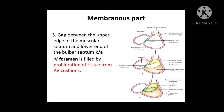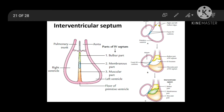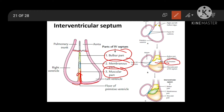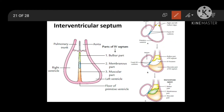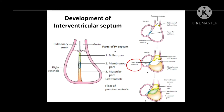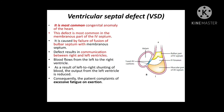Thus the interventricular septum is formed by three parts: first is the bulbar part, second is the membranous part, and third is the muscular part. Muscular part develops from the floor of the ventricle, bulbar part from the bulbar ridges in the distal bulbous cordis, and the interventricular foramen between them is filled by the membranous part, developing from fused AV cushions. This is how the interventricular septum is formed.